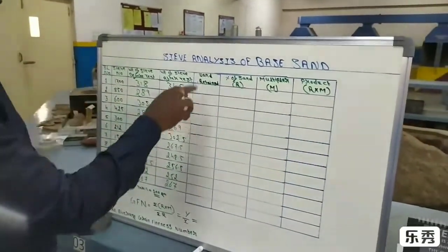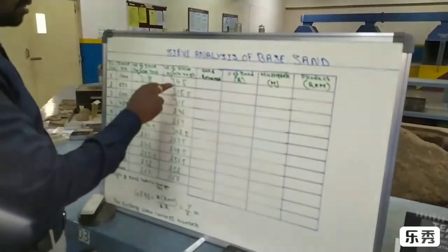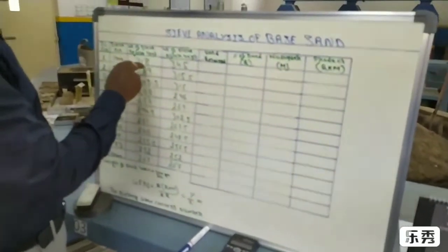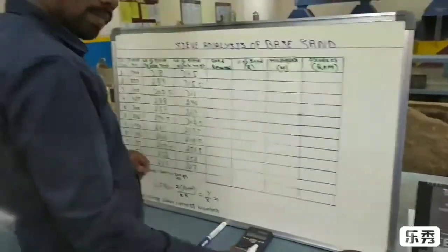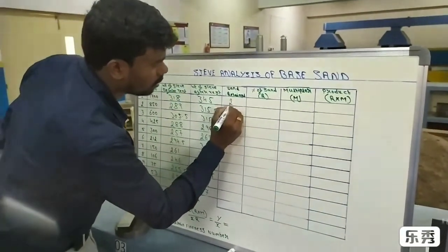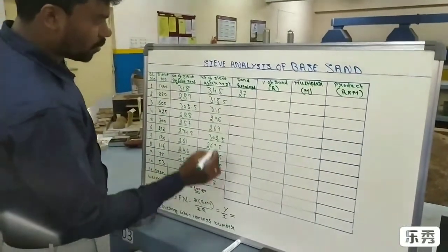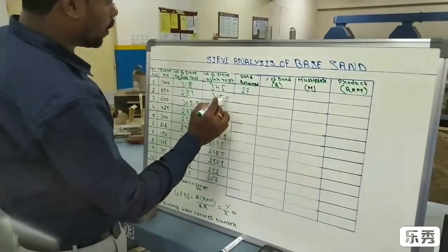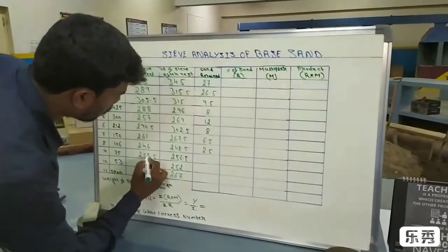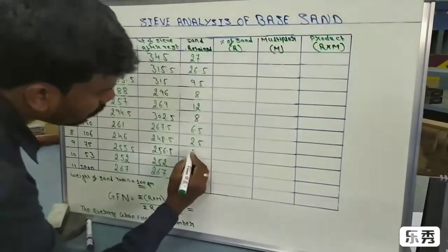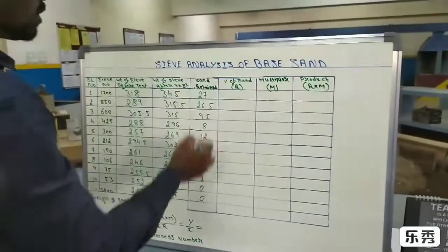Now we find the sand return for each sieve by subtracting weight before test from weight after test. For example: 345 minus 318 equals 27 grams sand return. Similarly, 256.5 minus 250 equals 5.5 grams. Some sieves may show zero. The pan also shows zero sand return.